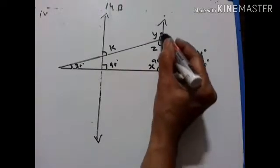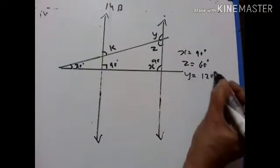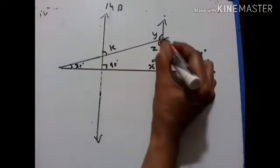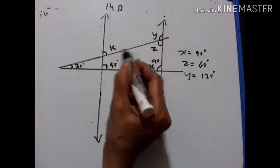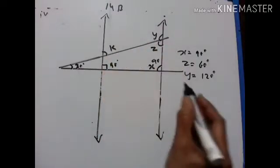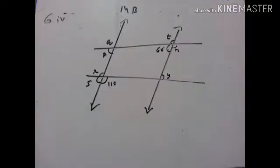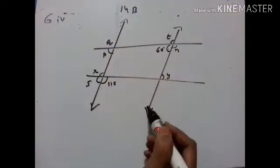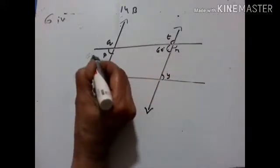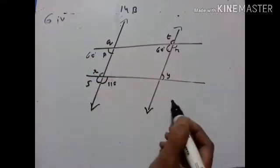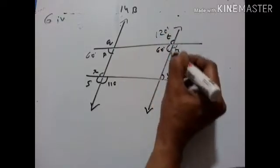If this is 60, this is 120 — linear pair. Y is equal to 120 degrees. Y and K are co-interior angles, therefore K is equal to 60 degrees. These two lines are parallel, so if this is 60, then P is also 60 degrees — corresponding angles. If this is 60, T is equal to 120 — linear pair.